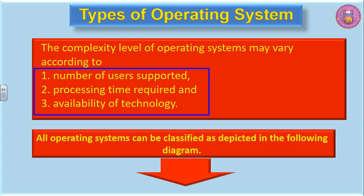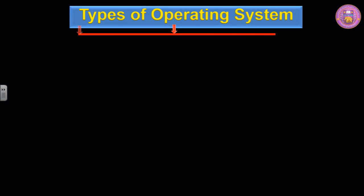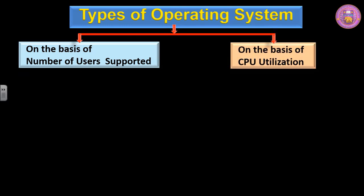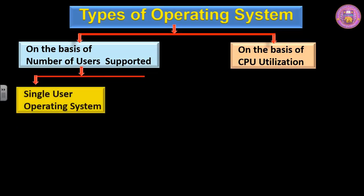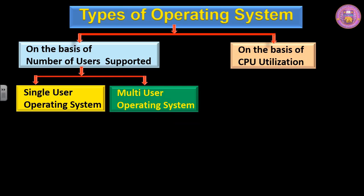All operating systems can be classified as depicted in the following diagram — on the basis of number of users supported and on the basis of CPU utilization. On the basis of number of users supported, we have two types: single-user operating system and multi-user operating system.